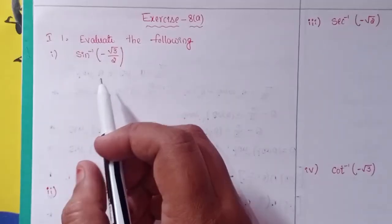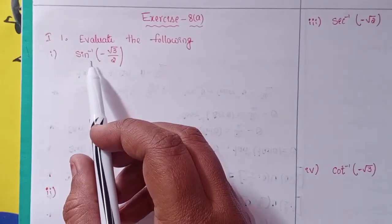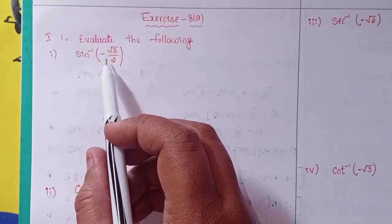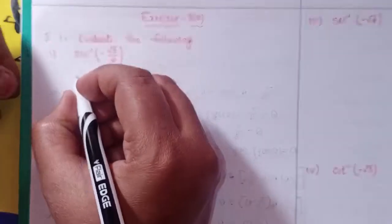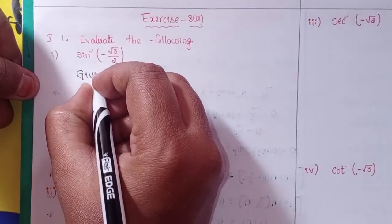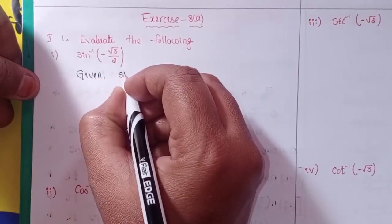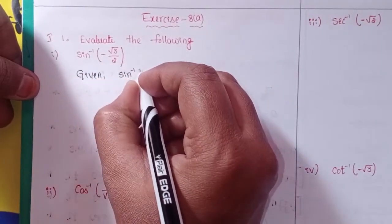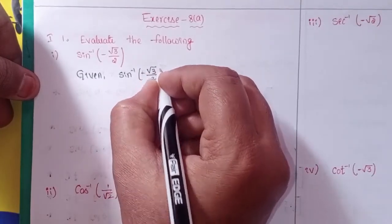Evaluate the following: first, 1A, sin inverse of minus root 3 by 2.